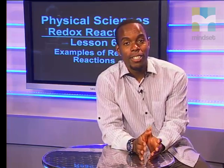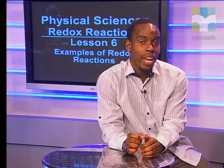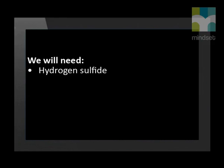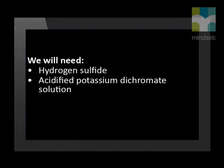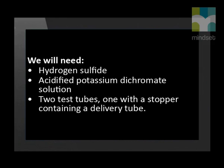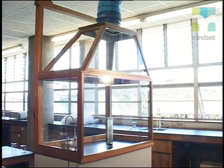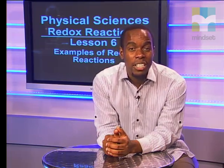In this experiment, we will investigate the reaction between hydrogen sulfide and potassium dichromate. We will need hydrogen sulfide, acidified potassium dichromate solution, two test tubes, one with a stopper containing a delivery tube. Please note that this experiment must be carried out in a fume cupboard. Hydrogen sulfide has a horrible rotten egg smell and is also very toxic.